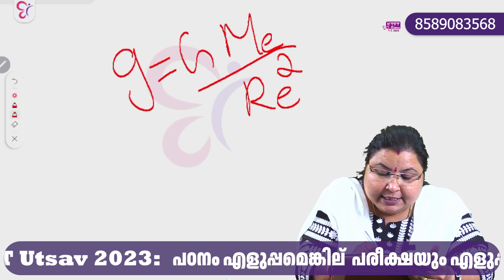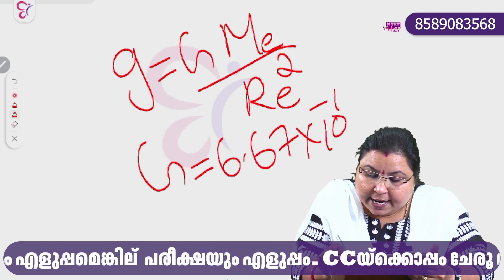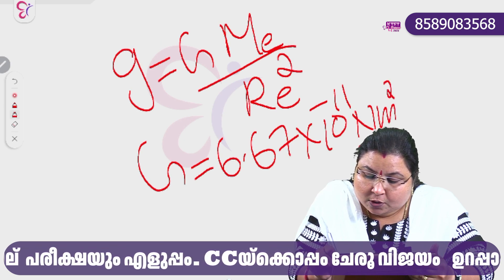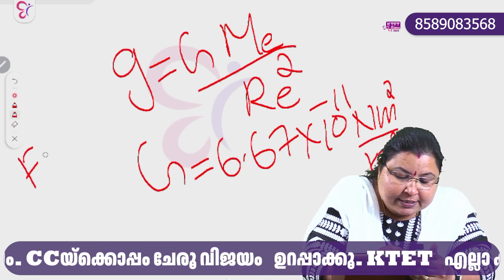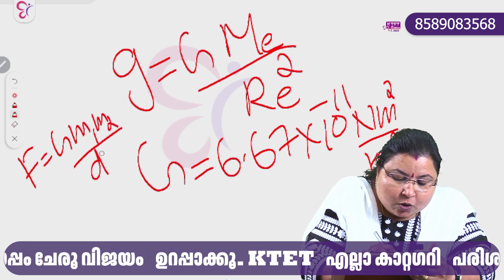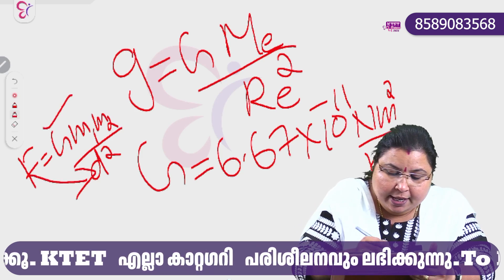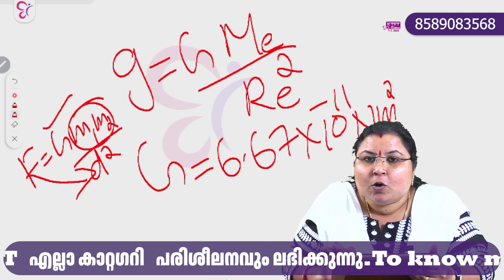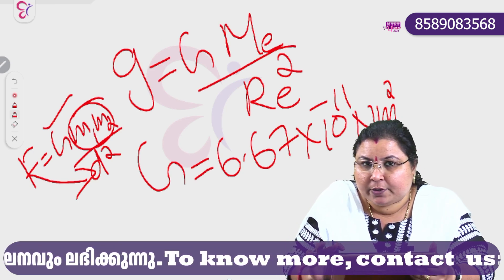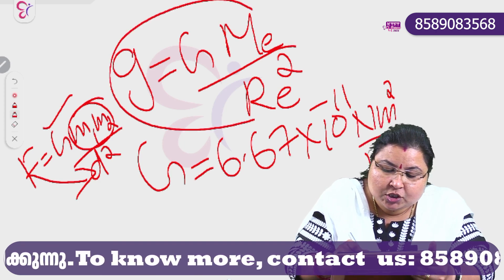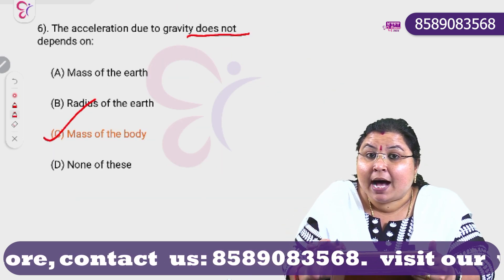The gravitational constant G has a value of 6.67 into 10 raised to minus 11 newton meter square divided by kilogram square. The gravitational constant G is derived from F into D square divided by m1 m2. G is equal to G times M_e divided by r_e squared — gravitational constant G does not depend on mass of the body.